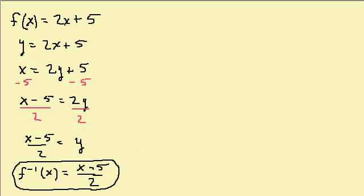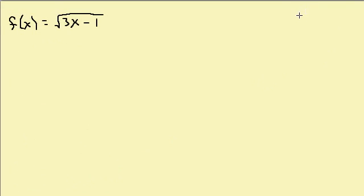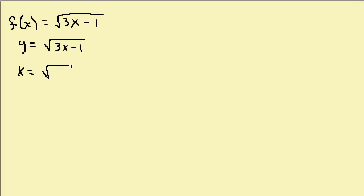Let's look at the next example. I have f of x equals the square root of 3x minus 1. So I'm going to change f of x to y, which gives me y equals the square root of 3x minus 1. Then I'm going to interchange x and y, so I get x equals the square root of 3y minus 1.